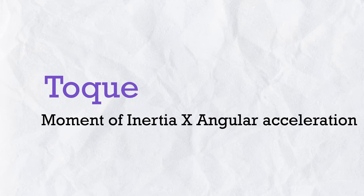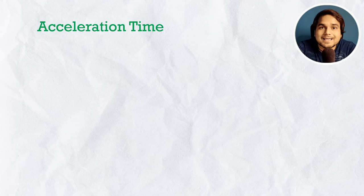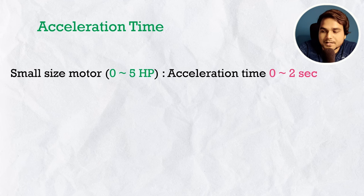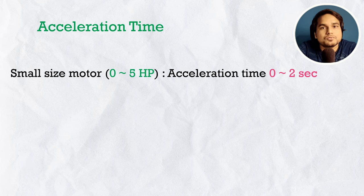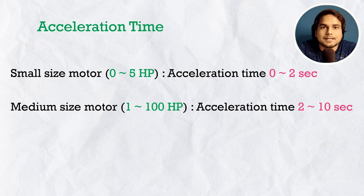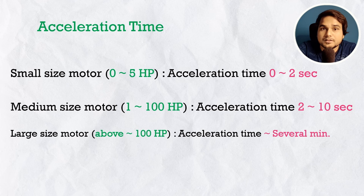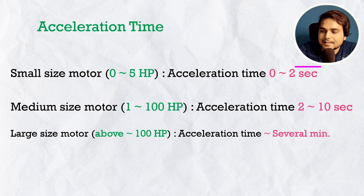To calculate inertia torque, we need angular acceleration = ΔΩ/t. The acceleration time depends on the load and motor size. For small motors under 4–5 hp, acceleration time is a fraction of a second to 2 seconds. For medium motors (5–100 hp), it is within 10–15 seconds. For large motors (above 100 hp), it can be several minutes. Since our motor is around 1 hp, we select an acceleration time of 2 seconds.